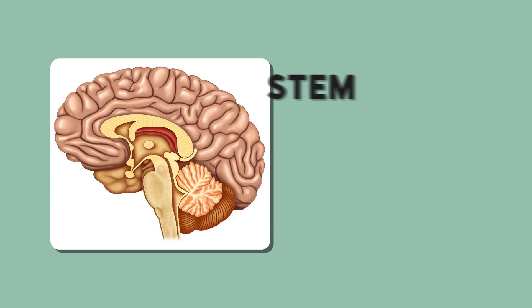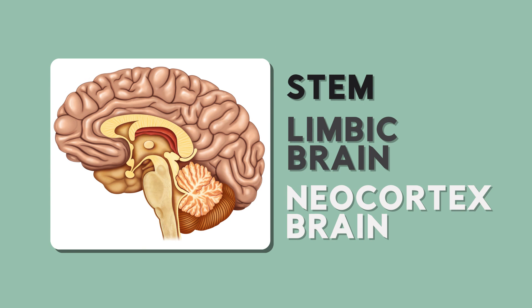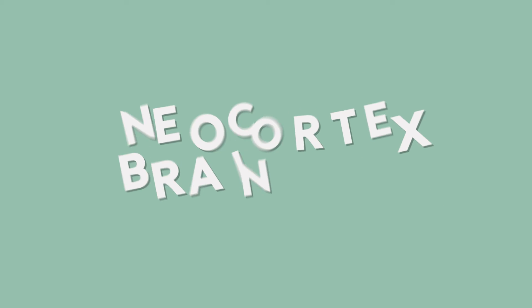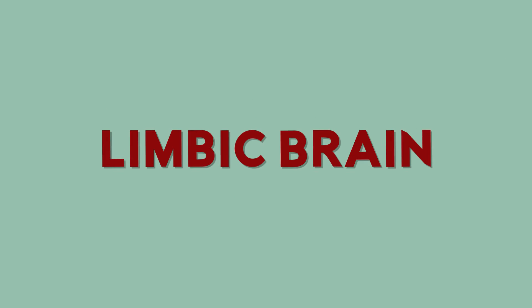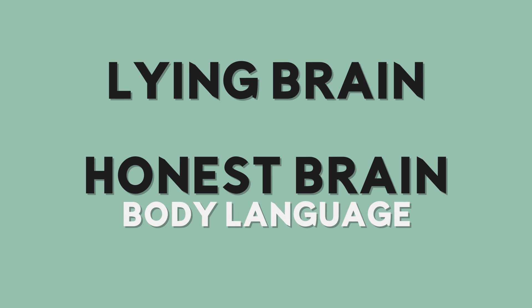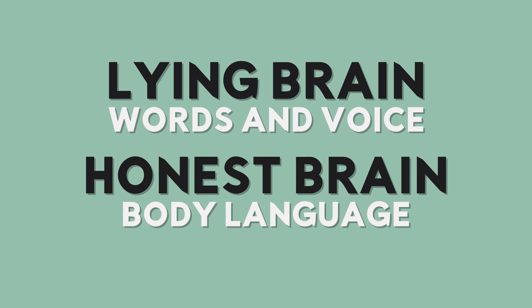So, we learned in this lesson that there are three parts of our brain, but two of them are of most importance: the neocortex brain and the limbic brain. But if you want to keep it simple, just know that you have a lying brain and an honest brain. The honest part handles body language, and the lying part handles the words and voice.